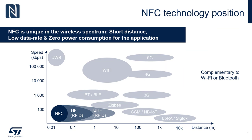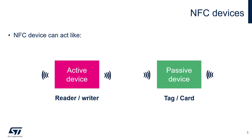Near field communication is a low data rate, short range wireless technology, and it's complementary to both Wi-Fi and Bluetooth. In fact, NFC is typically used for Bluetooth and Wi-Fi pairing. It's also very low power, since one side of the technology is passive. NFC devices can act like either an active device or a passive device. If they're an active device, they're a reader or writer, and if they're a passive device, they're a tag or a card.